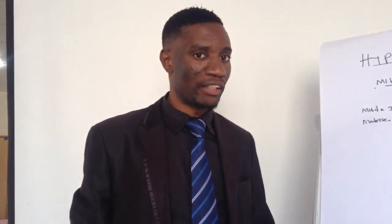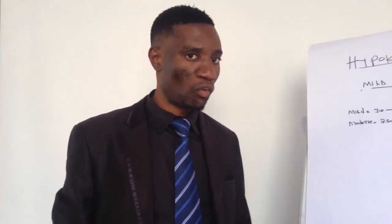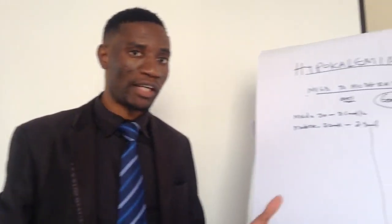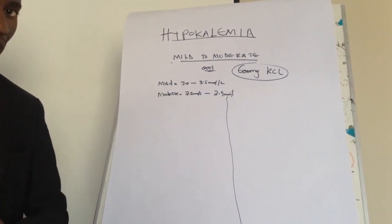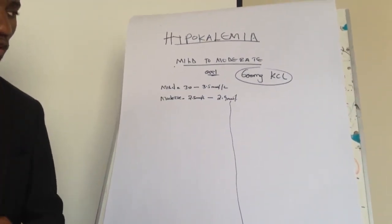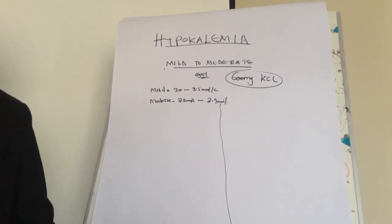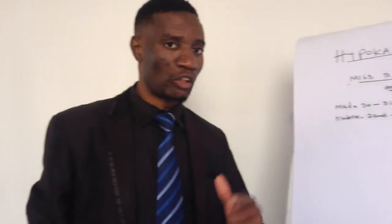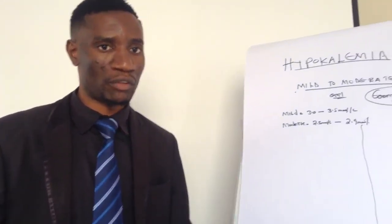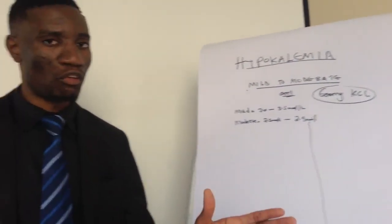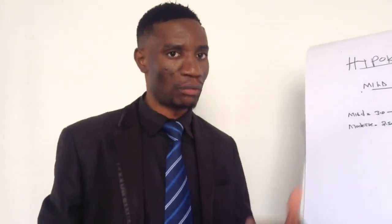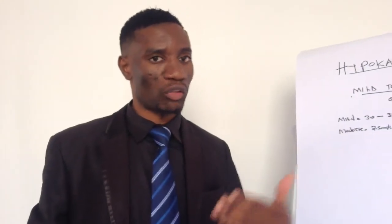We're looking at how you manage hypokalemia using oral drugs, specifically for mild to moderate hypokalemia. We'll look at the calculation in the context where the doctor prescribes the drug in millimoles and the pharmacy has a certain composition in milligrams — how do you convert that and how many tablets do you dispense?